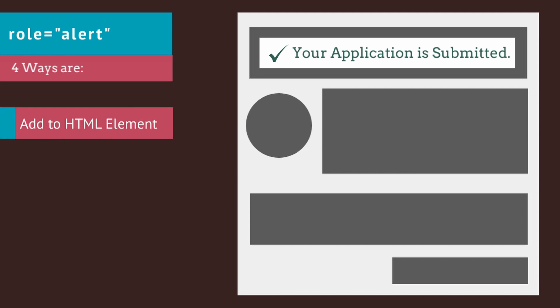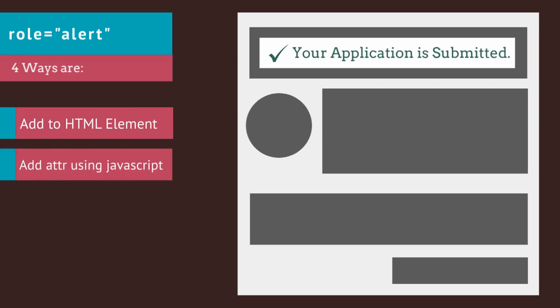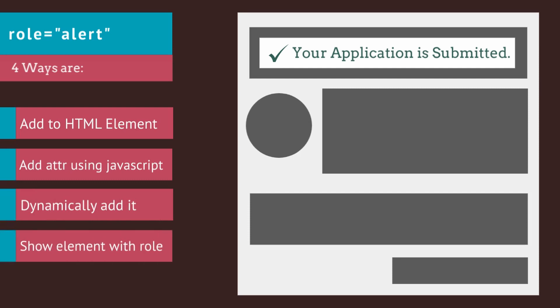The second best practice is to use role alert for success and error messages. There are four ways to trigger announcements: first, add role equals alert to the HTML element; second, add the attribute role equals alert using JavaScript; third, dynamically add an element with role alert; and fourth, by making the element with role alert visible.